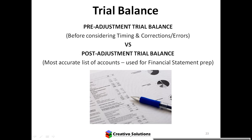If our debits equal credits, we know we've done things correctly. You get different types of trial balances. You'll be given a pre-adjustment trial balance because you'll have to make adjustments. Once you've adjusted, you'll have a post-adjustment trial balance showing accounts that have been balanced off, with journals posted to the accounts and final balances totaled up in each account.